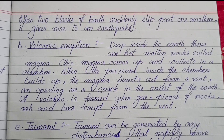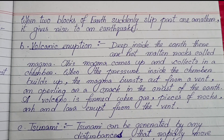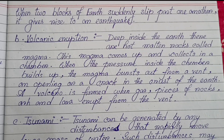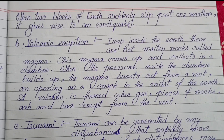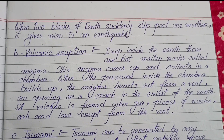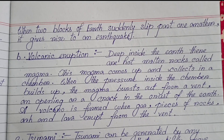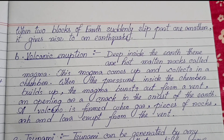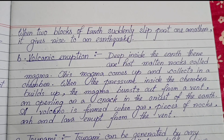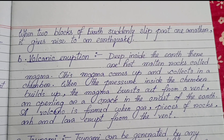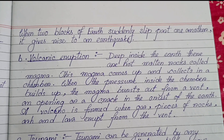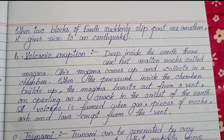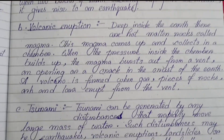(b) Volcanic eruption: Deep inside the earth there are hot molten rocks called magma. This magma comes up and collects in a chamber. When the pressure inside the chamber builds up, the magma bursts out from a vent — an opening or a crack in the crust of the earth. A volcano is formed when gas, pieces of rocks, ash and lava erupt from the vent.